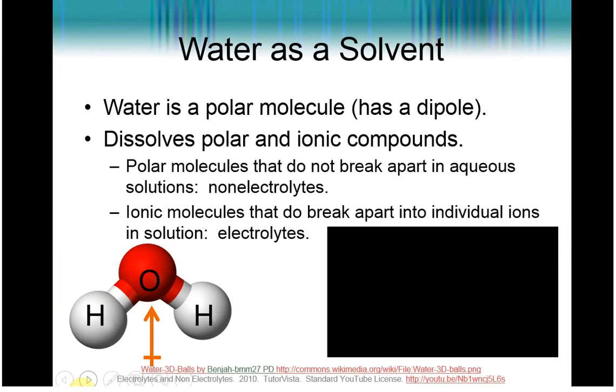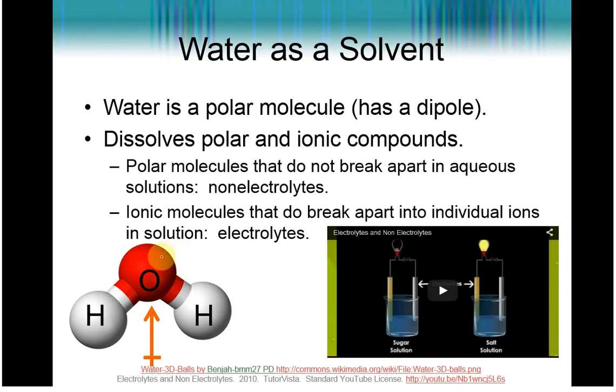Now, water is a polar molecule. It has a dipole. That means that the oxygen up here is going to pull electrons towards it from these two bonds, and it is going to take electrons away from the hydrogen. This is going to cause a partial negative and a partial positive charge on opposite ends of the molecule. That is going to allow polar and ionic compounds to dissolve.